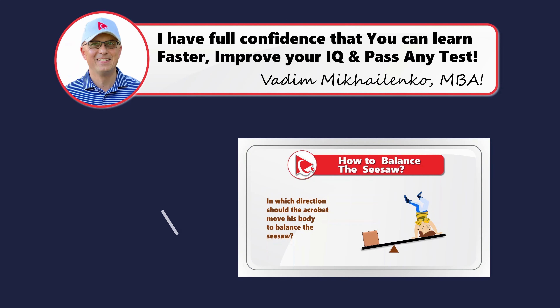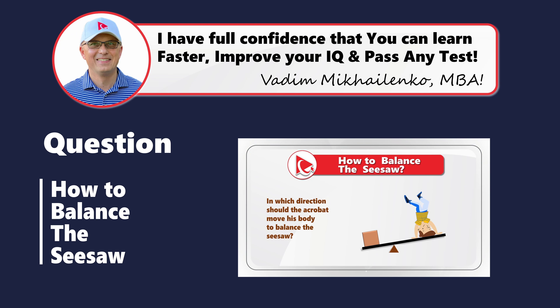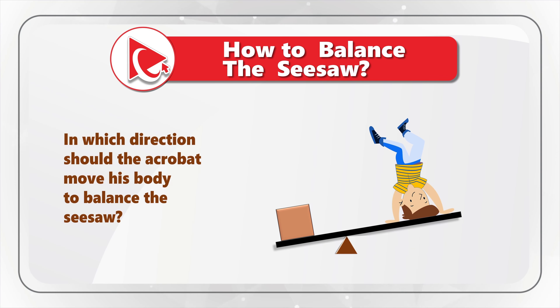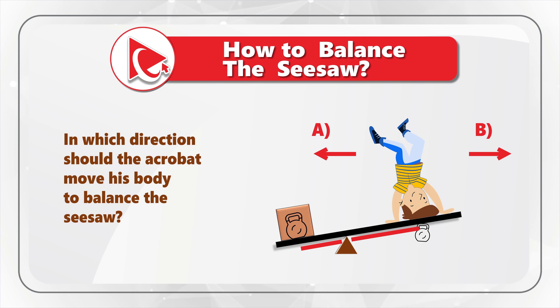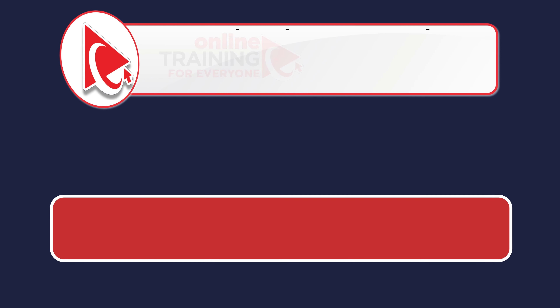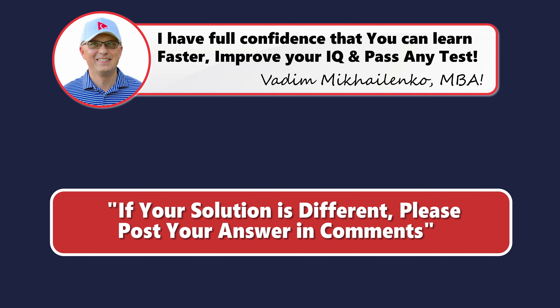Now I have a question for you to practice your skills. You are presented with a seesaw. On the left side there is a weight, and on the right side there is an acrobat. You need to determine in which direction the acrobat should move his body to balance the seesaw. You have two choices: Choice A – to the left, or Choice B – to the right. Take a close look, maybe pause this video to see if you can come up with the answer, and post your answer in the comments so I can give you feedback. Good luck solving the challenge.